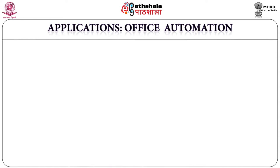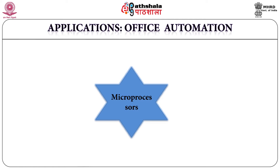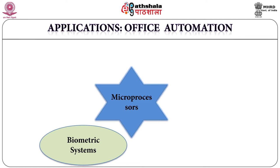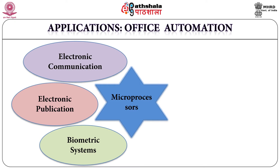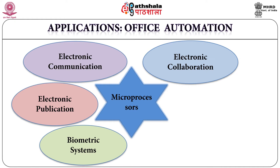Microprocessors play a very important role in office automation as a building block of biometric systems for recording employee attendance. Electronic publication is used for word processing and desktop publishing for daily activities such as letters, drafts, reports, proposals and presentations. Collaboration through electronic meetings and video conferencing is a need of today's business, administrative and scientific activities.